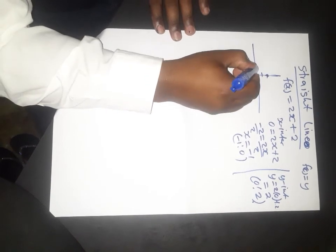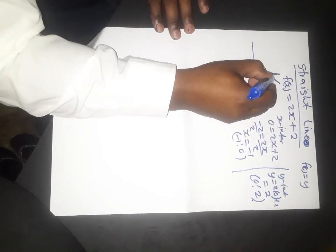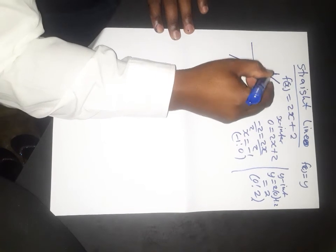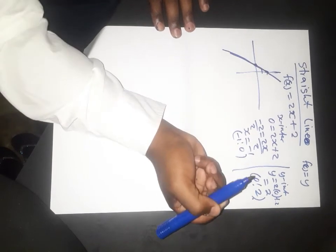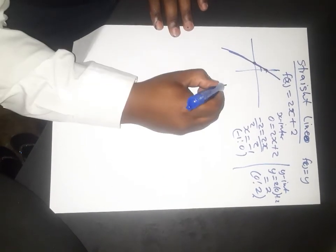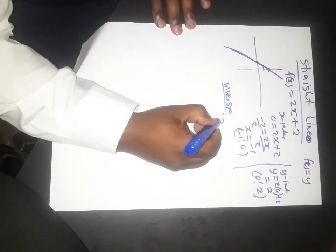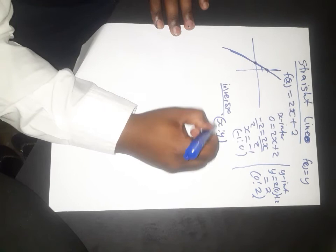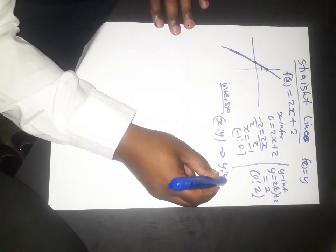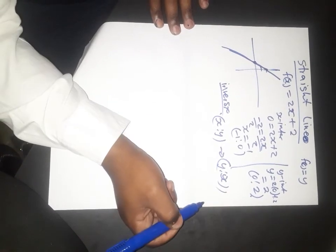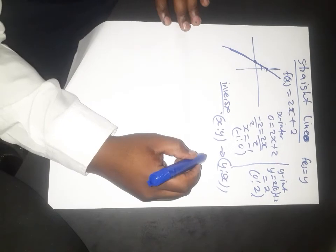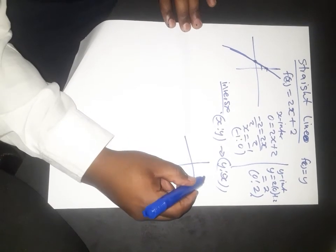So we can now graph the inverse. For the inverse function, where x maps to y, we switch it so that y maps to x. Right, so let's say we have a coordinate.